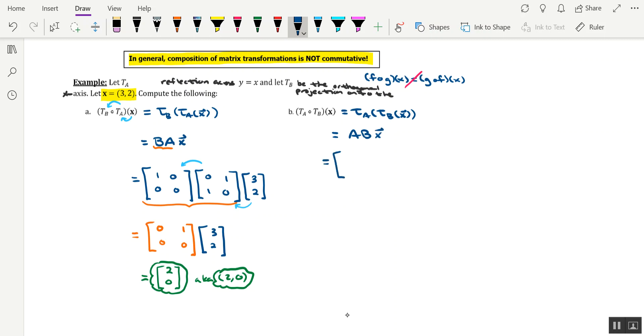This boils down to A B x. From the last part, here's the matrix A. Here's the matrix B. And here's x.